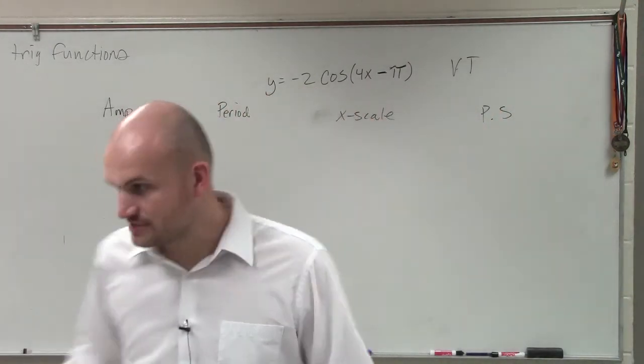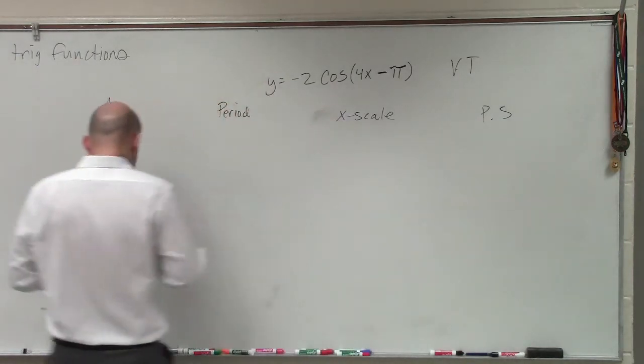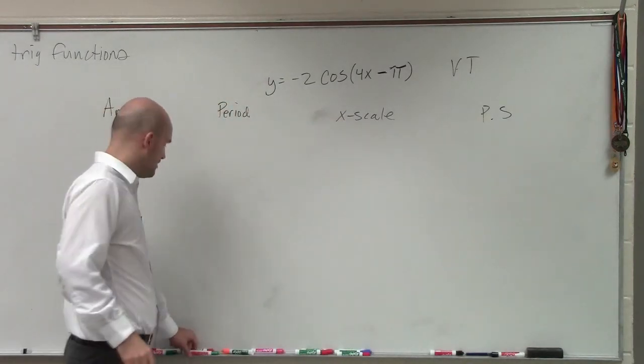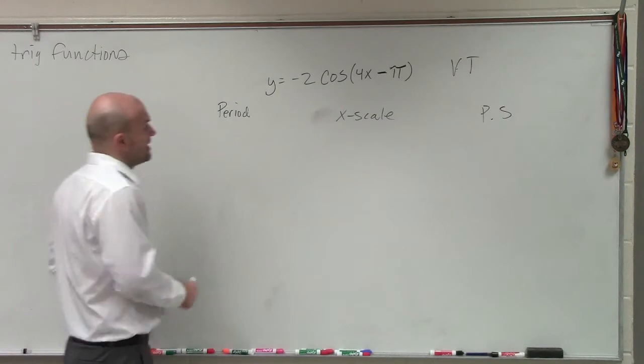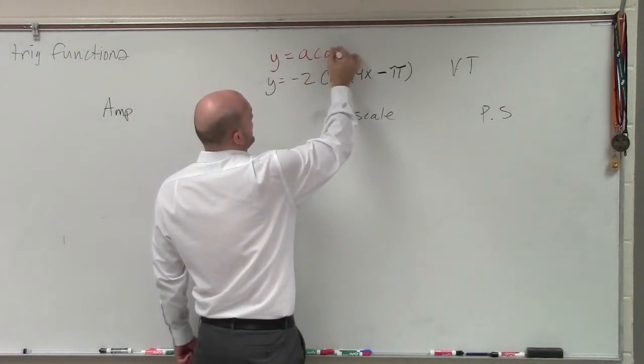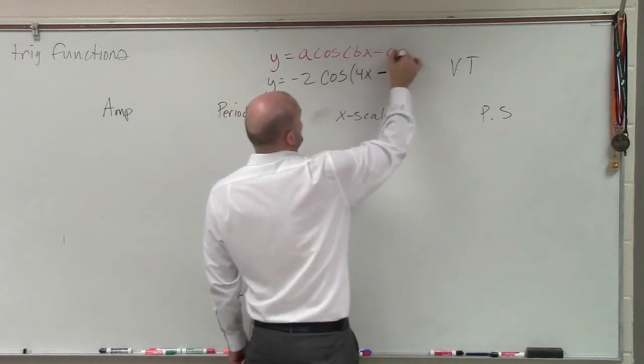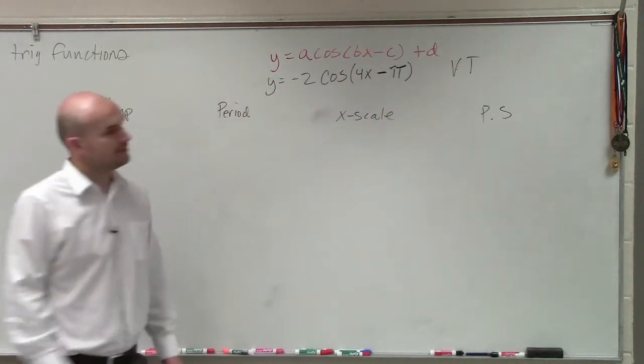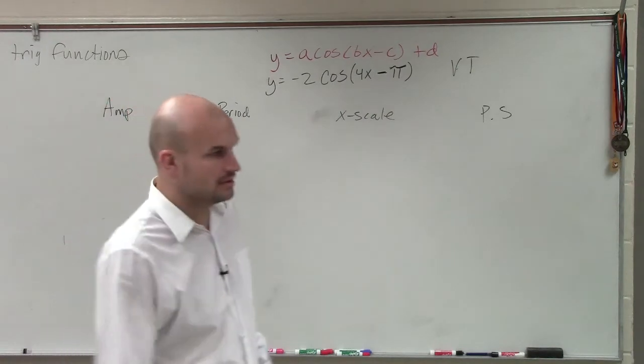So let's find all those. Now, remember, the first thing, amplitude. Amplitude is the absolute value of a. Now, before I actually get into that, let's write in our general transformation form is a times cosine of bx minus c plus d.